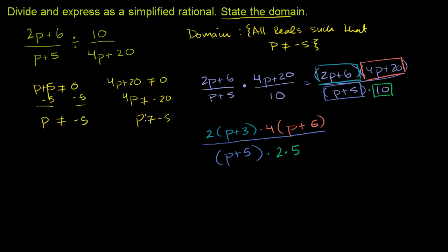Now let's see what we can simplify. And of course, this whole time we have to add the caveat that p cannot equal negative 5. We have to add this restriction on the domain in order for it to be the same expression as the one we started off with.